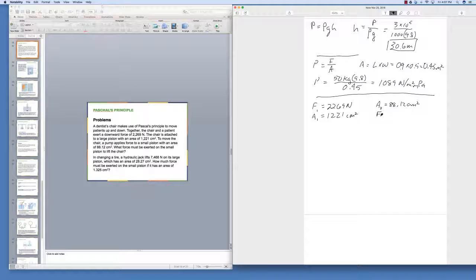So the question obviously is how much force do you have to apply here? So F1 over A1 is equal to F2 over A2. If you rearrange this, F2 is going to equal F1 A2 over A1. And that's going to equal 2269 times 88.12 divided by A1, which is 1221. And that equals 163.7 newtons.